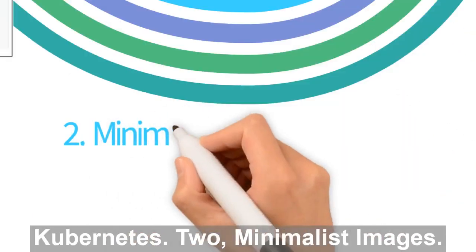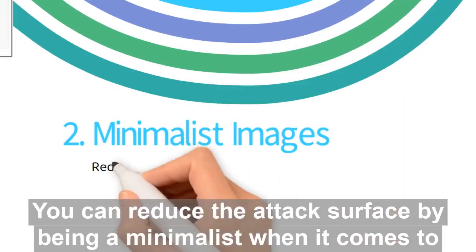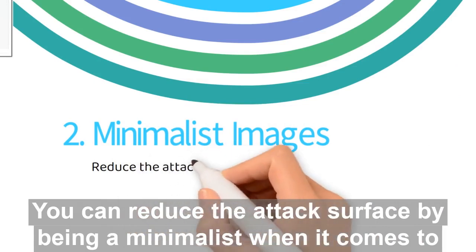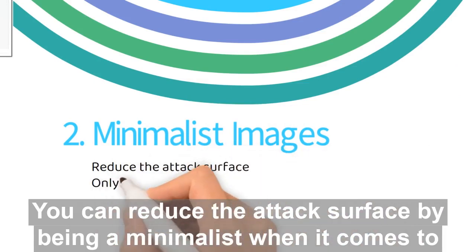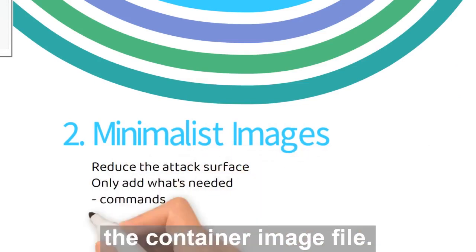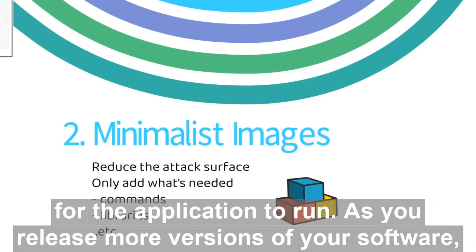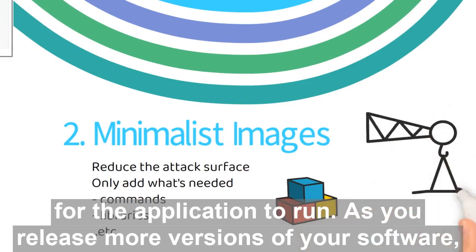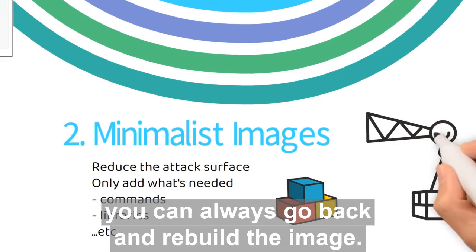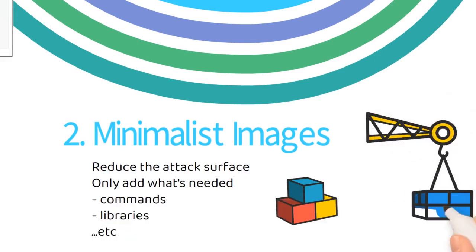Two: minimalist images. You can reduce the attack surface by being a minimalist when it comes to the container image file. Start with the smallest image possible and only add the libraries required for the application to run. As you release more versions of your software, you can always go back and rebuild the image.